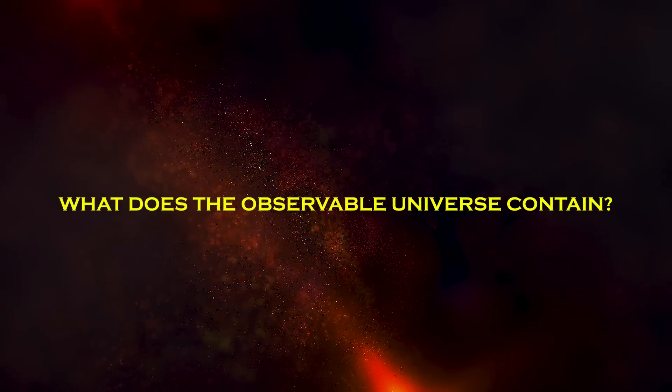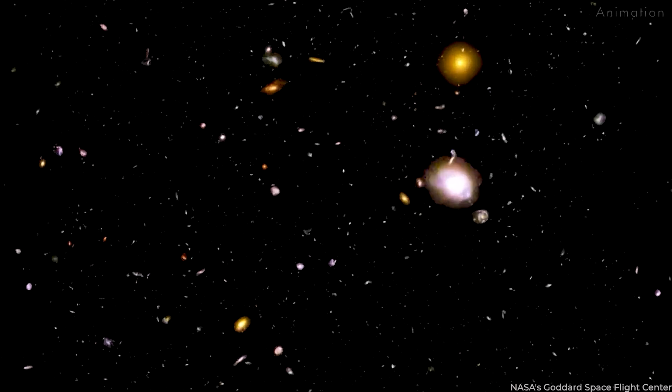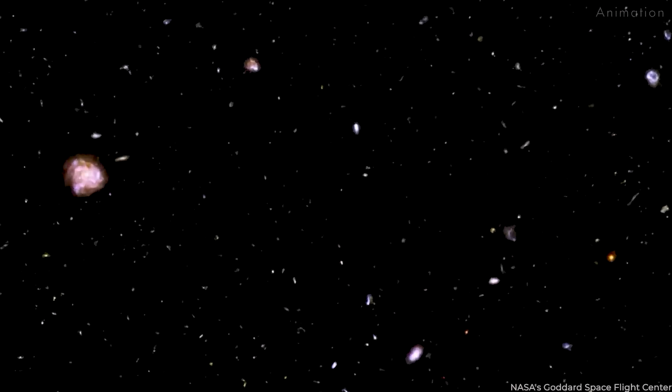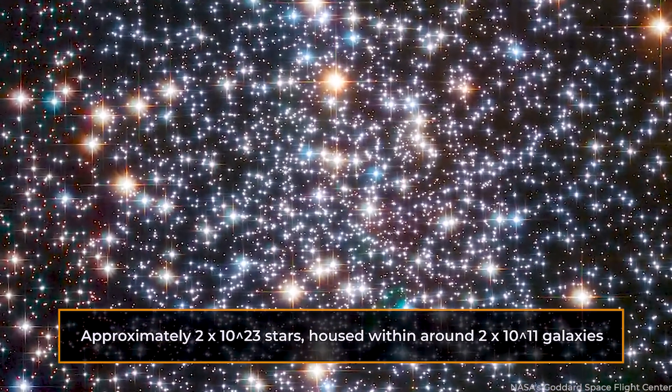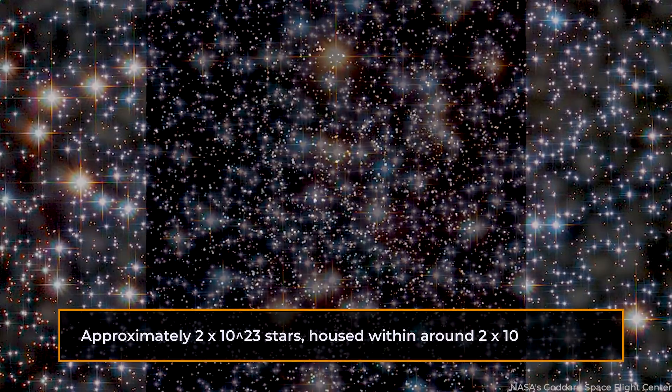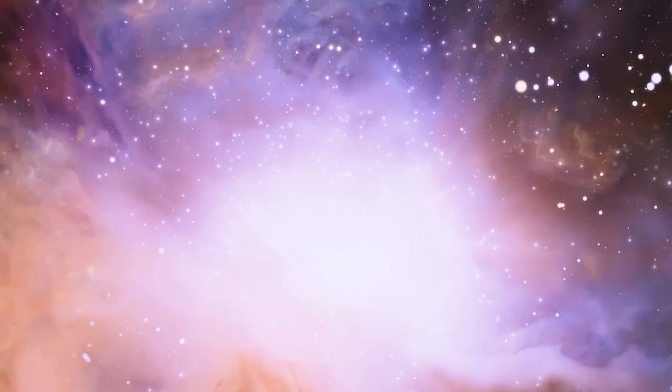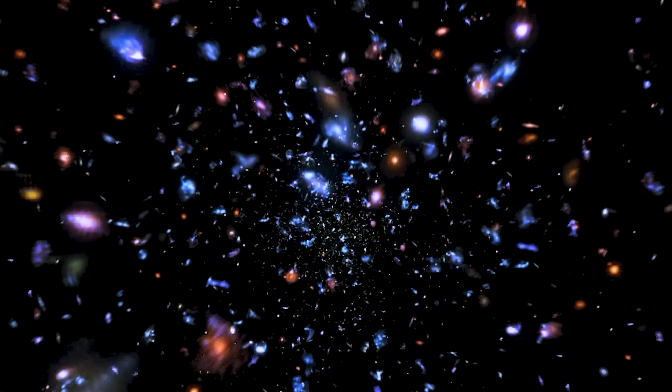Now, what does the observable universe contain? It's not just a black void with a few stars sprinkled here and there. It's actually brimming with approximately 2 times 10 to the power of 23 stars, housed within around 2 times 10 to the power of 11 galaxies. And that's not all. There's dark matter and dark energy, mysterious components that we're still trying to understand. And in some intergalactic gas, cosmic dust, high energy cosmic rays, neutrinos, and other forms of matter and energy, then you've got quite the cosmic cocktail.